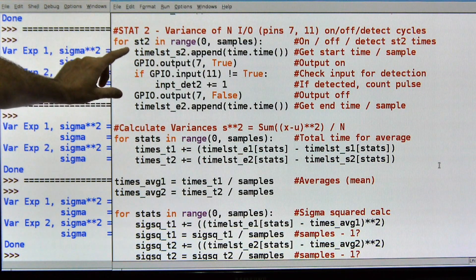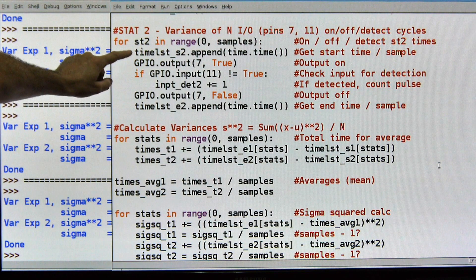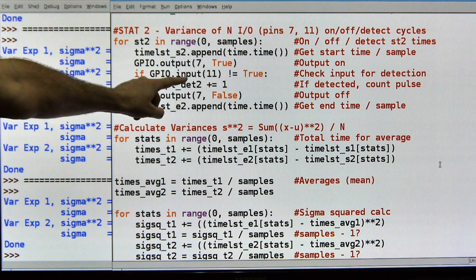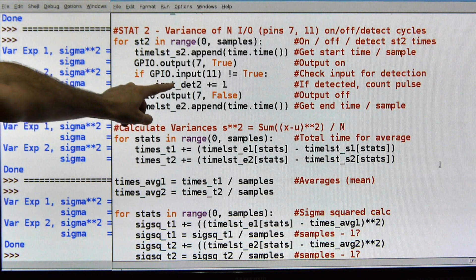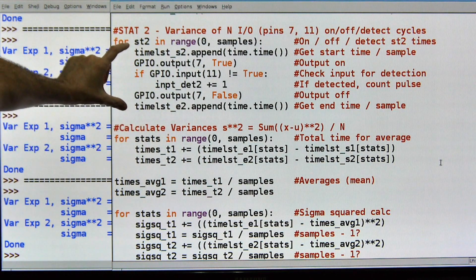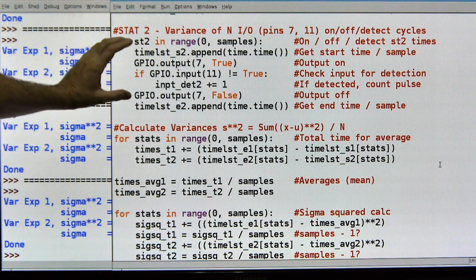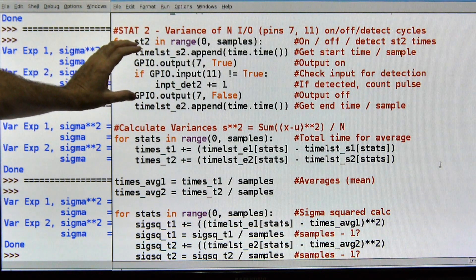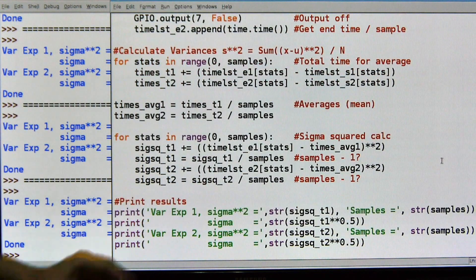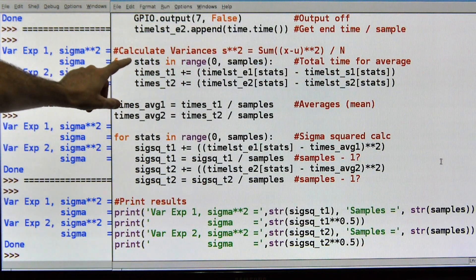Stat experiment two is exactly like the last bit of code, as close as I can make it. And what I'm going to do is, this experiment is, I record the amount of time it takes to turn on pin seven, detect it with pin 11, and then record that, and then turn off pin seven. So I record the beginning and end times, and I'm going to loop through this, and each time I record that amount of time it took to do that.